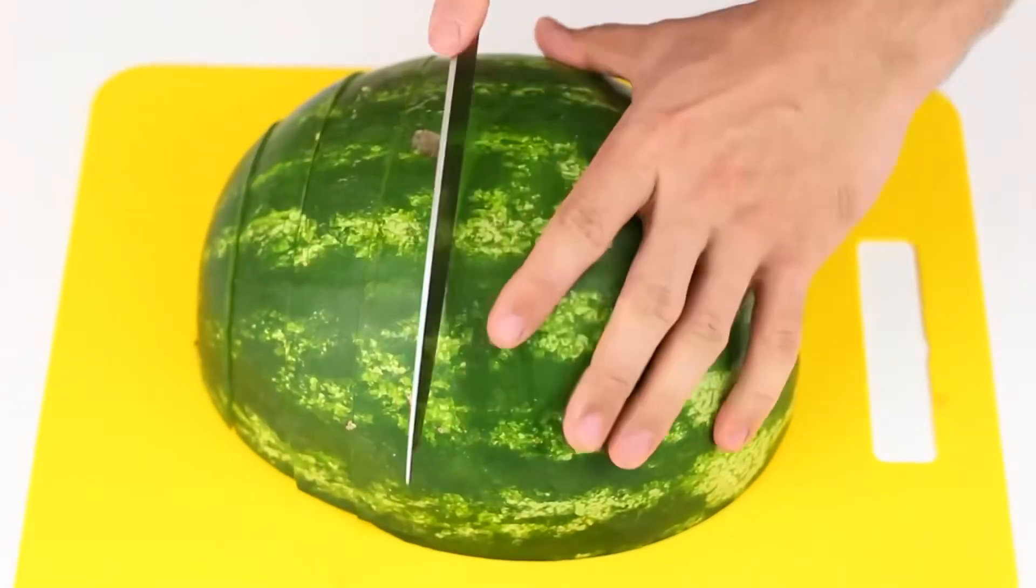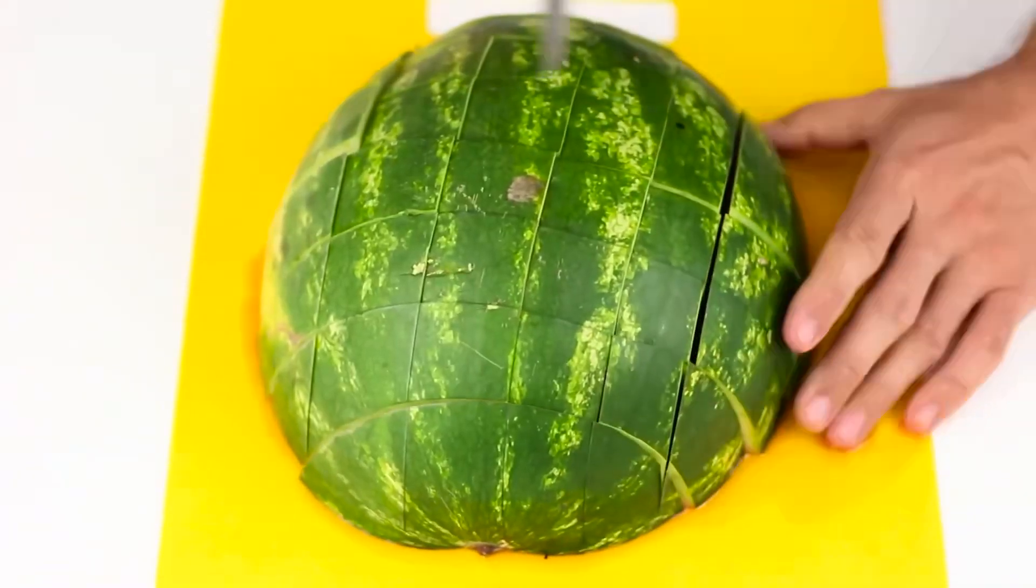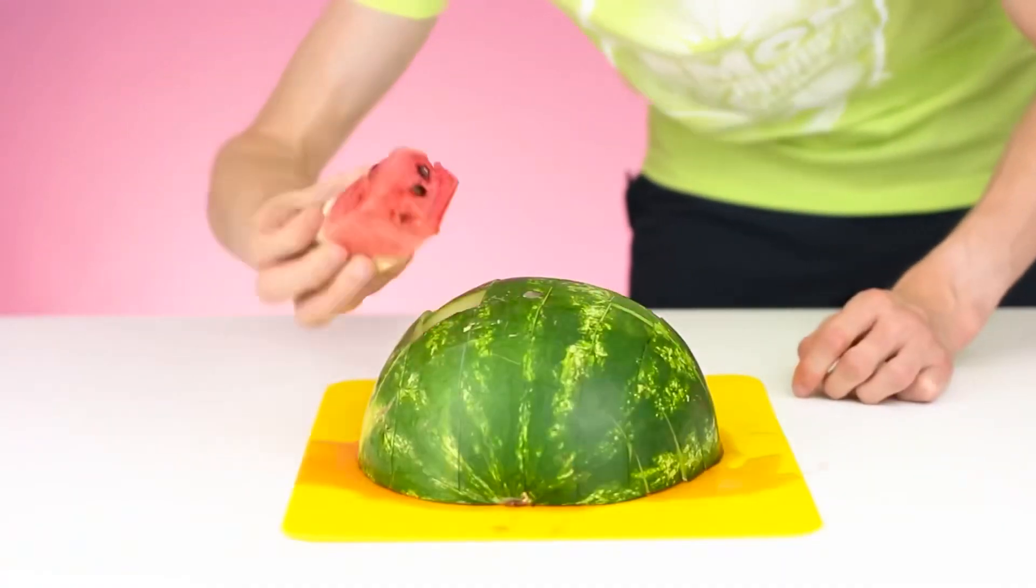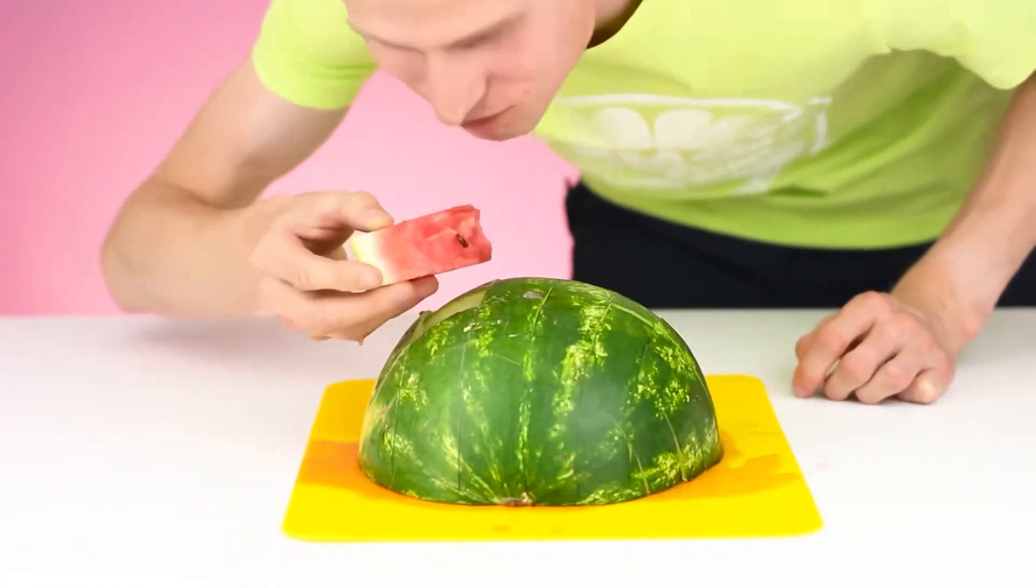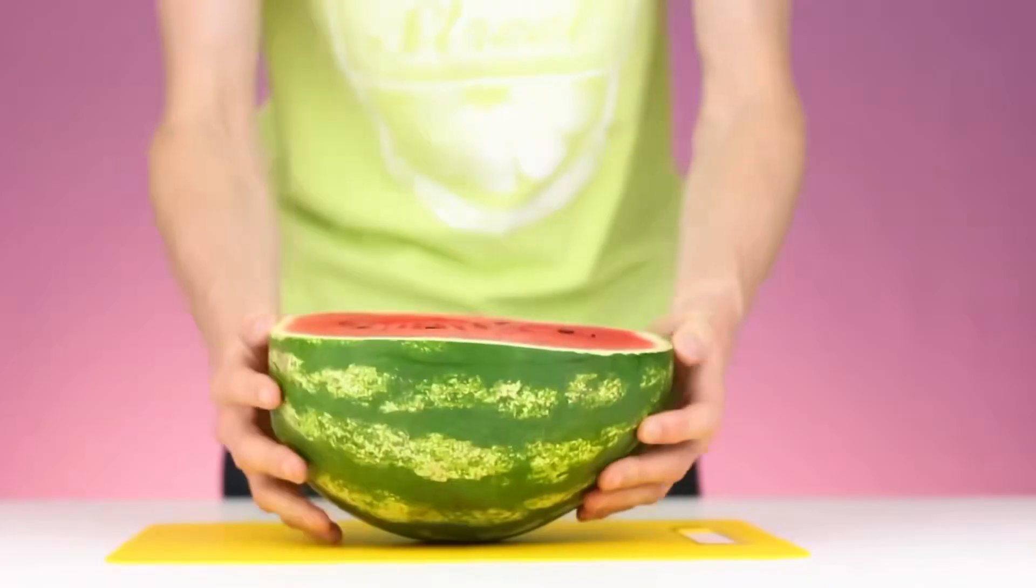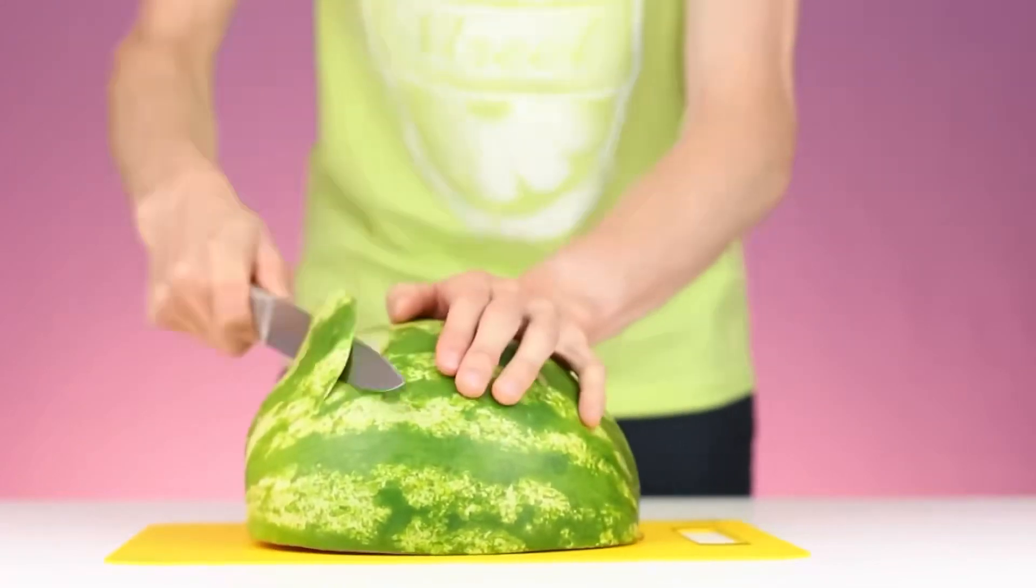For the third method, divide the watermelon in half. We will lay one of the halves on the table and make cuts along and across. This way we will get watermelon pieces that are convenient to take with your hands. And the crust can always be put back in the plate.